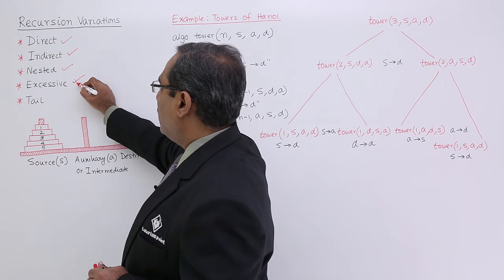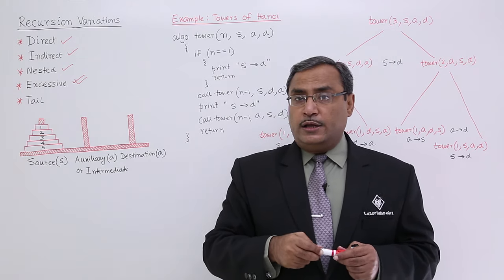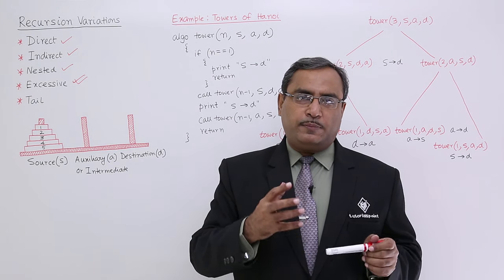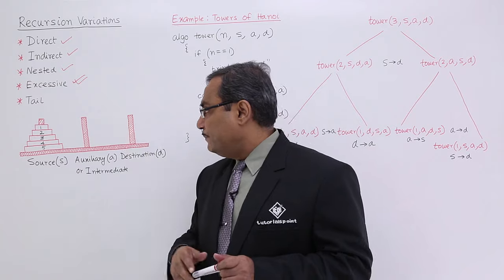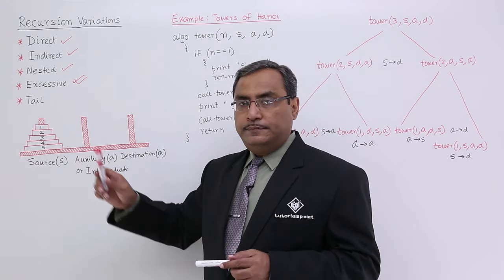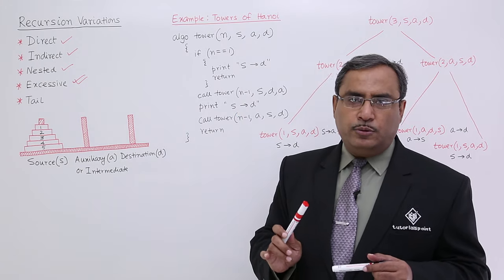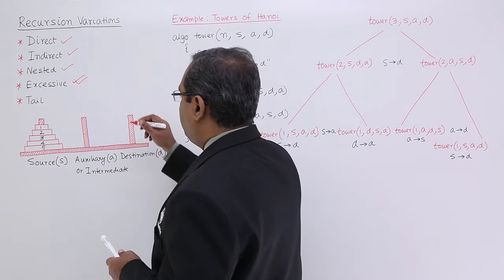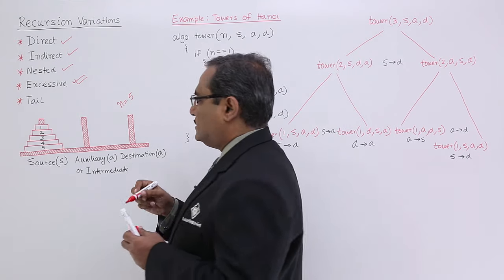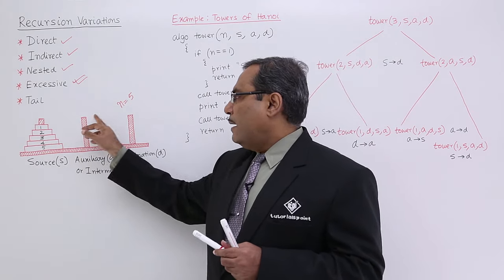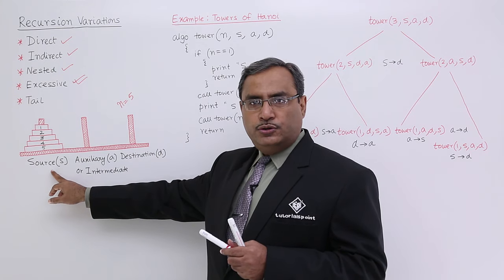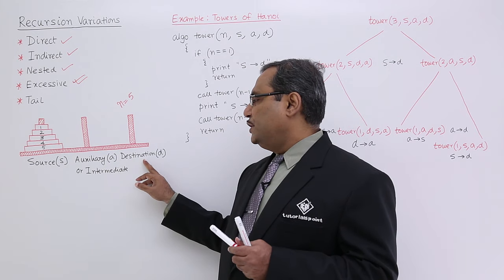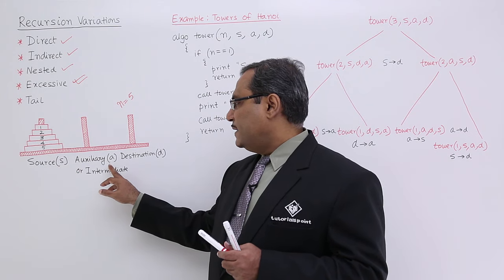We are going to look at a second example of excessive recursion, which is the very common problem of Towers of Hanoi. We have 3 pegs and 5 disks — though it is not mandatory that we always have 5 disks; we can have 3, 4, 7 disks and so on, so here n equals 5. These pegs are named Source (S), Auxiliary or intermediate (A), and Destination (D).